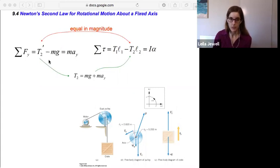So tension positive, the weight of the crate, mg, is negative, equals mass times the acceleration in the y direction.